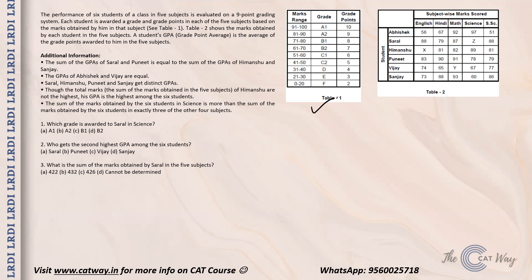Three figures have been omitted — these three values X, Y, and Z are unknown. A student's GPA, that is grade point average, is the average of grade points awarded in the five subjects.